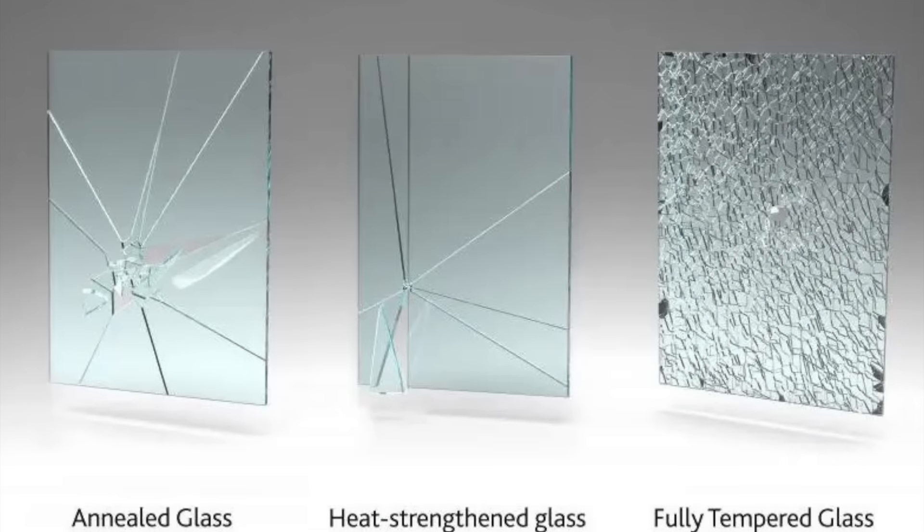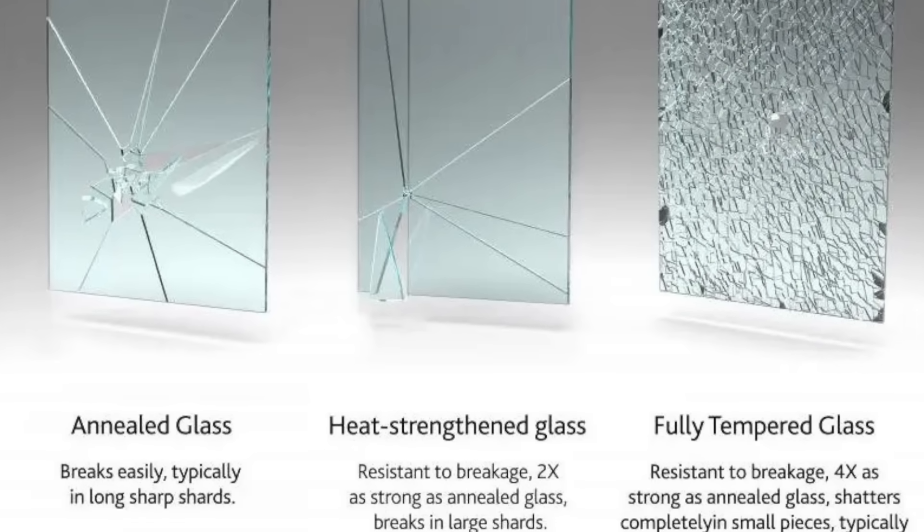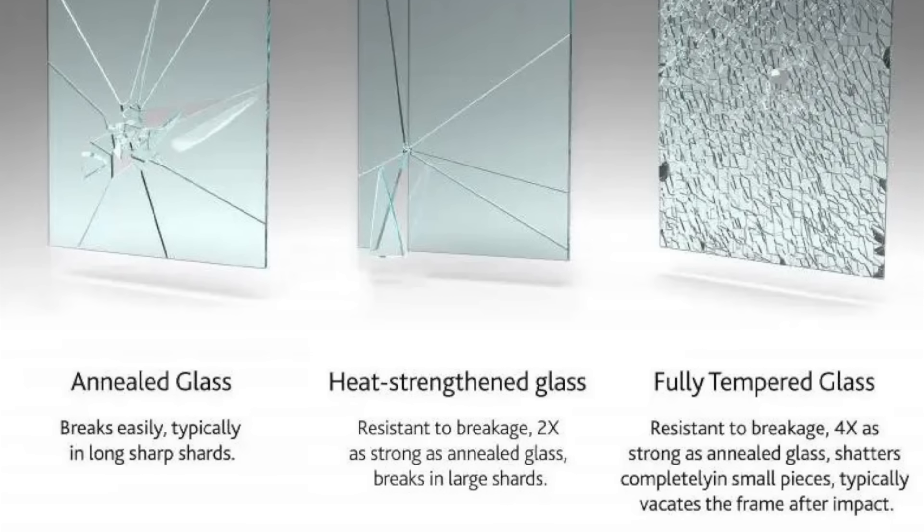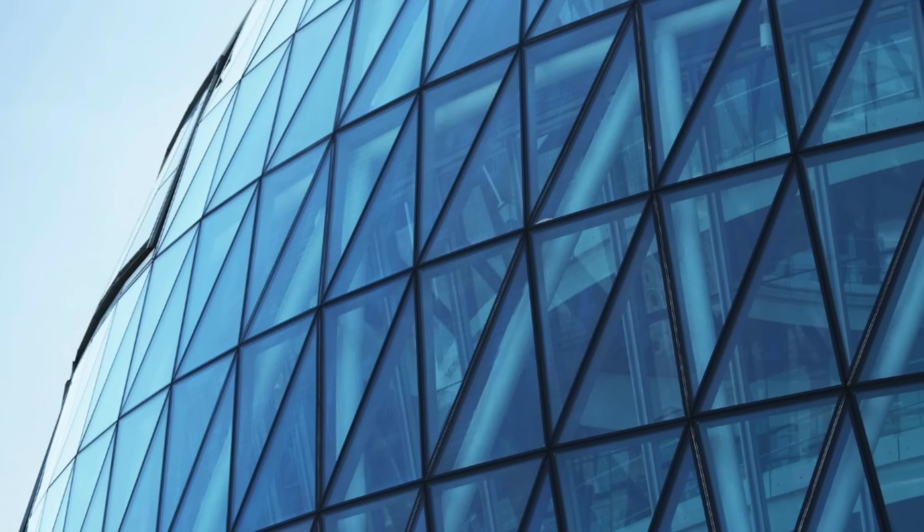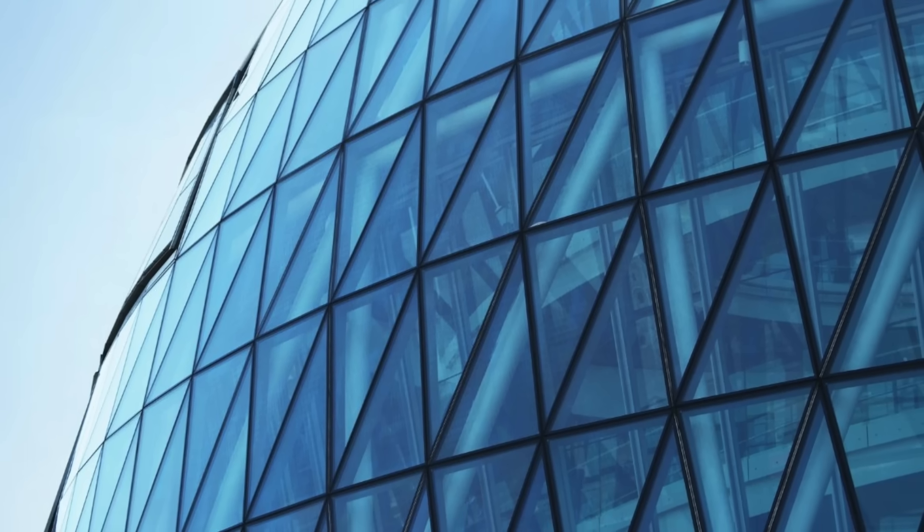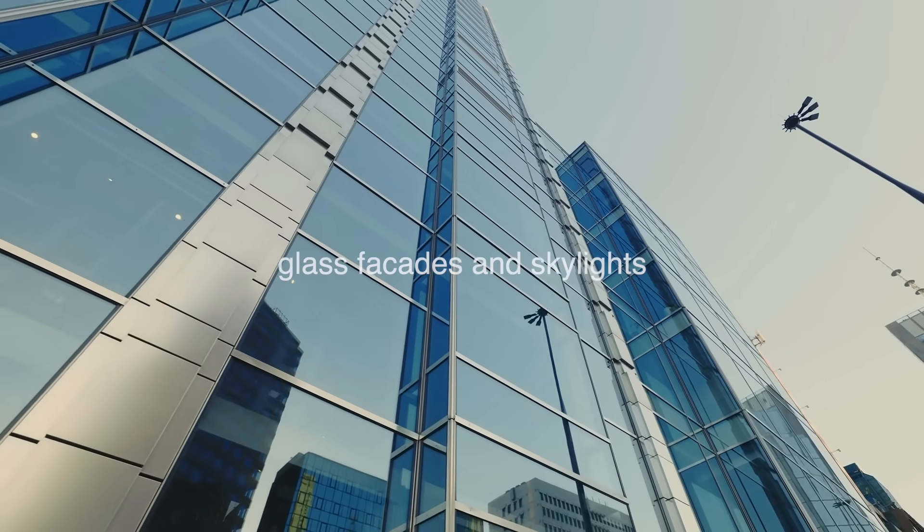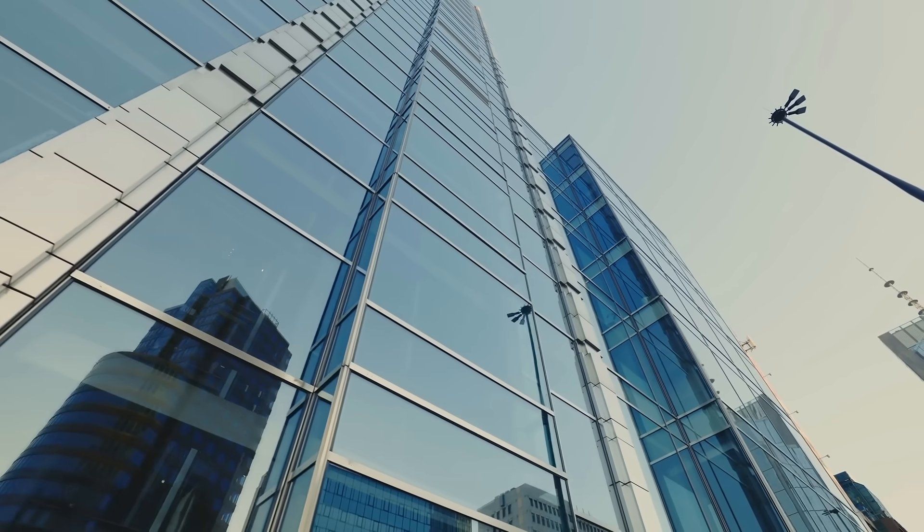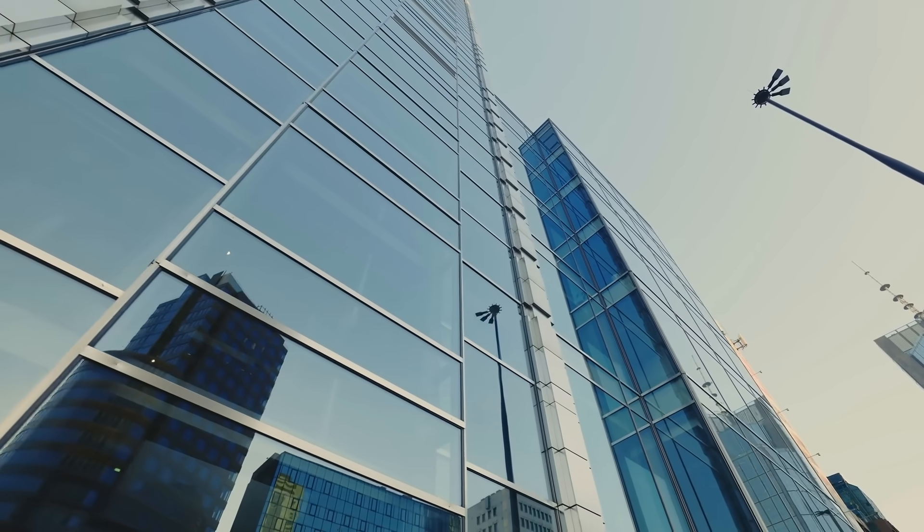Heat-strengthened glass is less likely to break spontaneously than tempered glass, but when it does break, it breaks into larger, sharper pieces. It is often used in applications where the glass is subject to high levels of thermal stress, such as in glass facades and skylights. The advantage is that it can withstand greater temperature differences without breaking, making it good for environments with extreme temperature fluctuations.